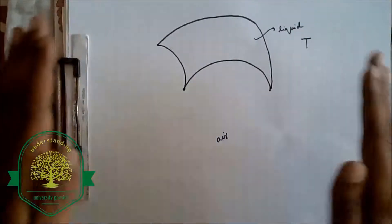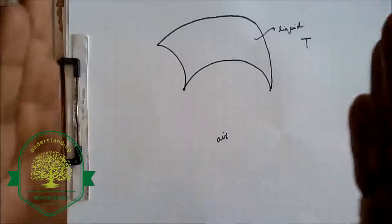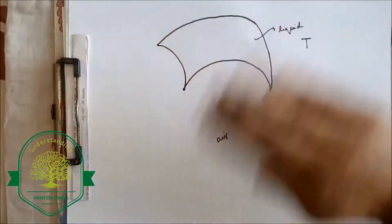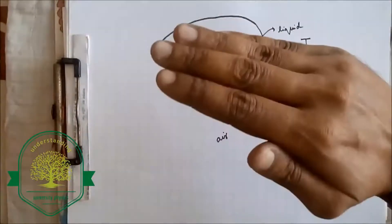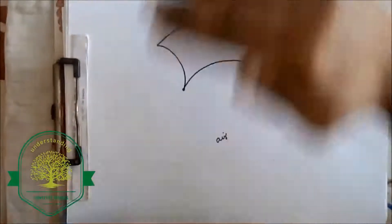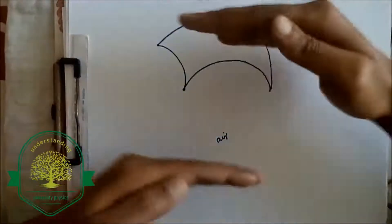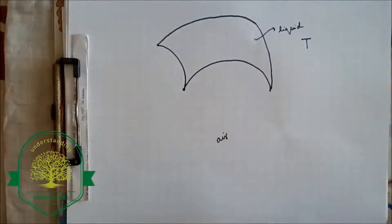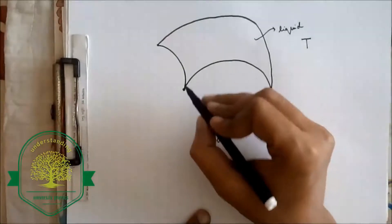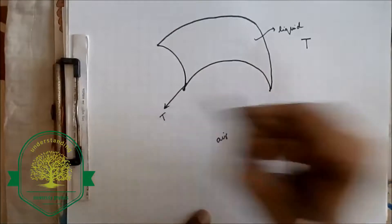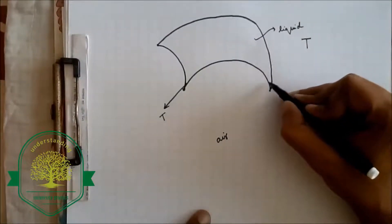The surface tension forces from these sides will act in the downward direction — their horizontal components will cancel out and their vertical components will only add up. Similarly, for this side and this side, because the surface is curved the T forces will act such that horizontal components cancel and vertical components add up. So ultimately we will be left only with the vertical components of force. Let me draw a T force here and a T force here.